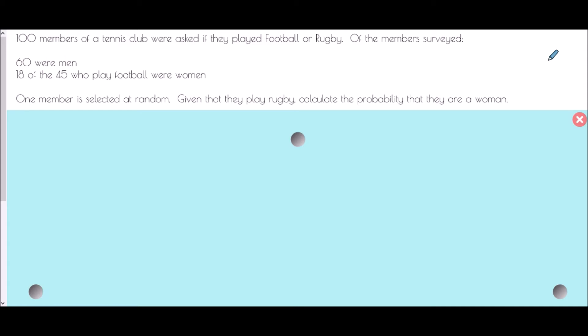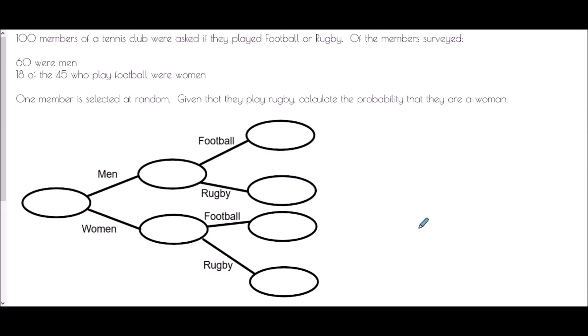OK, so our next task is basically the situation where we have to actually decide how do we go about solving this problem? We've got 100 members of a tennis club were asked if they played football or rugby. Of the members surveyed, 60 were men. 18 of the 45 who play football were women. One member is selected at random. Given that they play rugby, calculate the probability that they are a woman. Now, here, my little indication that I should be drawing a frequency tree is that I know all of the people who are involved and then within those people, I know they are being split into one set of categories, men or women, but also categories of playing football or rugby.